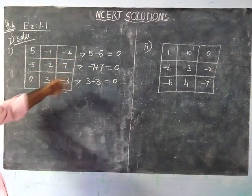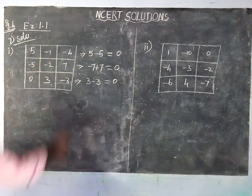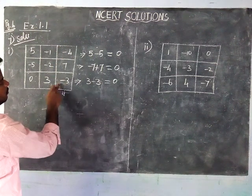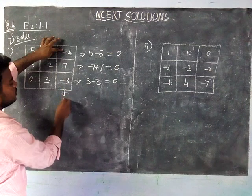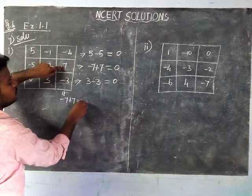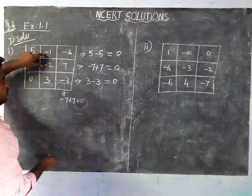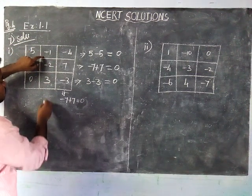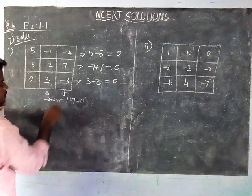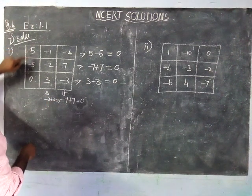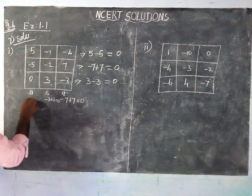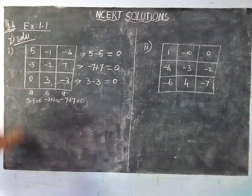All the rows are giving zero. Now we check the columns. First column: minus four, seven, minus three. Adding these two negative numbers: minus seven plus seven gives zero. Next, minus one and minus two: minus three plus three equals zero. Next, five, minus five, zero: plus five minus five equals zero. So all the rows and columns are giving zero — no problem.